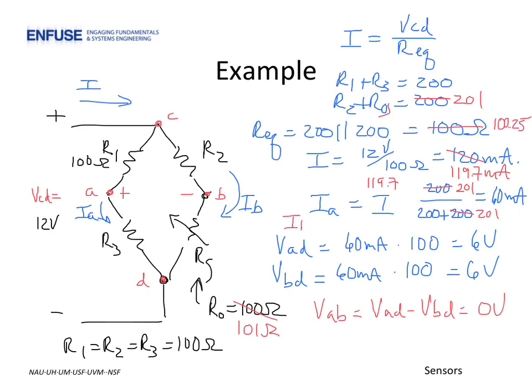However, if you do the same calculation for the right branch, we'll find the current is less. It turns out it's basically the delta between 119.7 minus 60 milliamps or 59.7 milliamps. Since IA is still flowing through resistor R3 and equals 60 milliamps, and nothing's changed with R3, the voltage VAD is still equal to 6 volts.